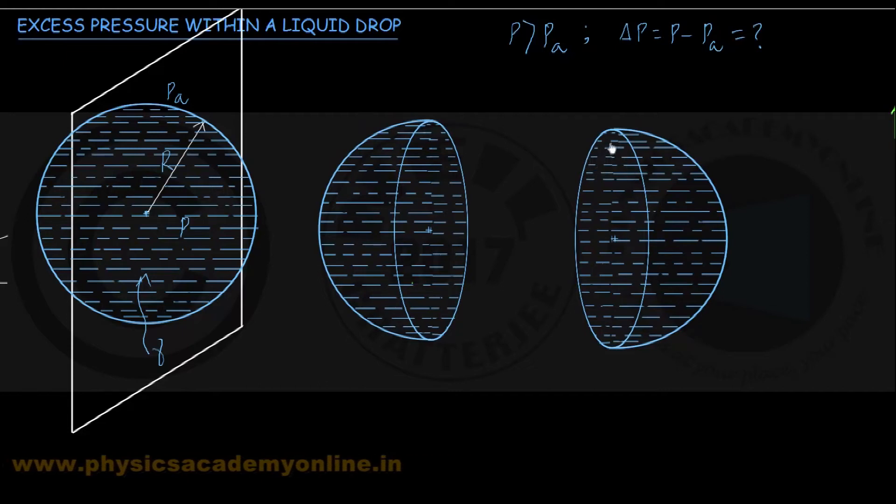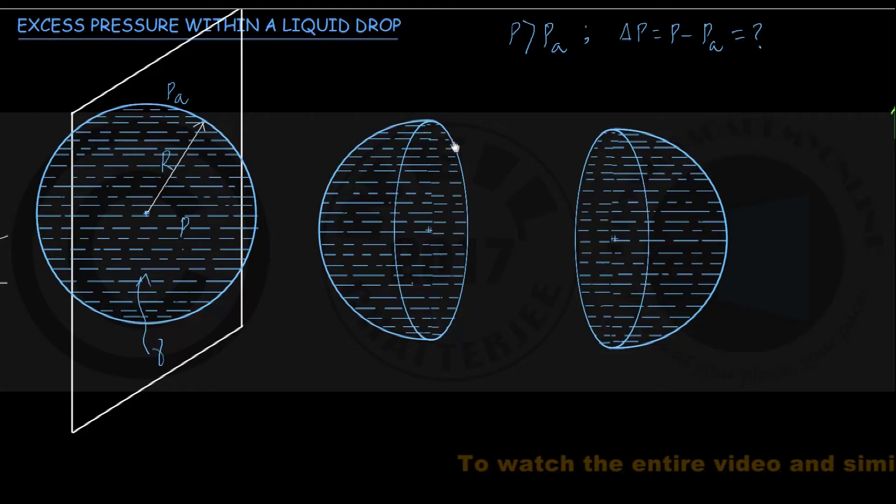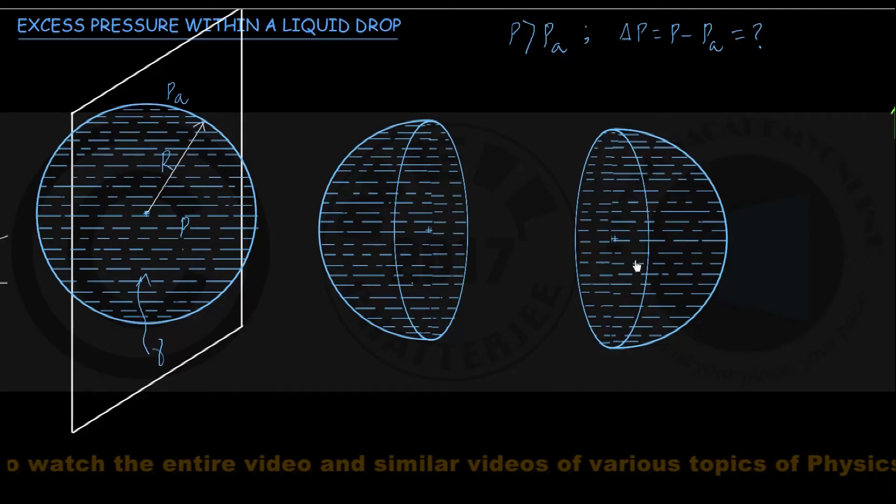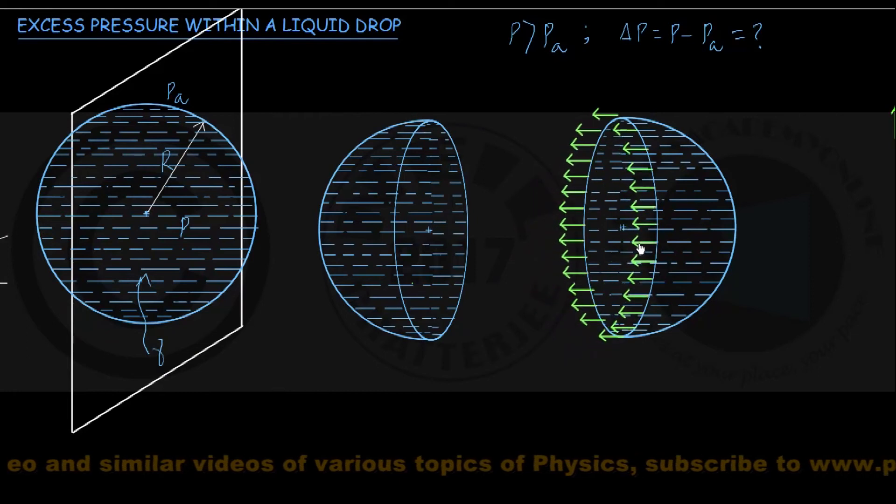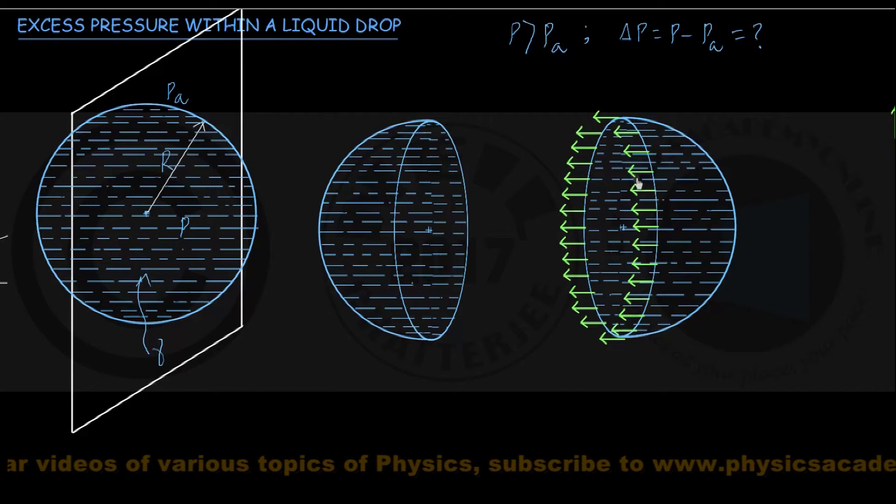We identify the forces acting on this right side hemisphere. First, the surface force. You can see here the hemisphere joins to the left hemisphere at the circular face of perimeter 2πR. If I divide this perimeter into small elementary lengths of dL each, on each elementary length the left hemisphere molecules will be exerting surface tension force in the leftward direction.